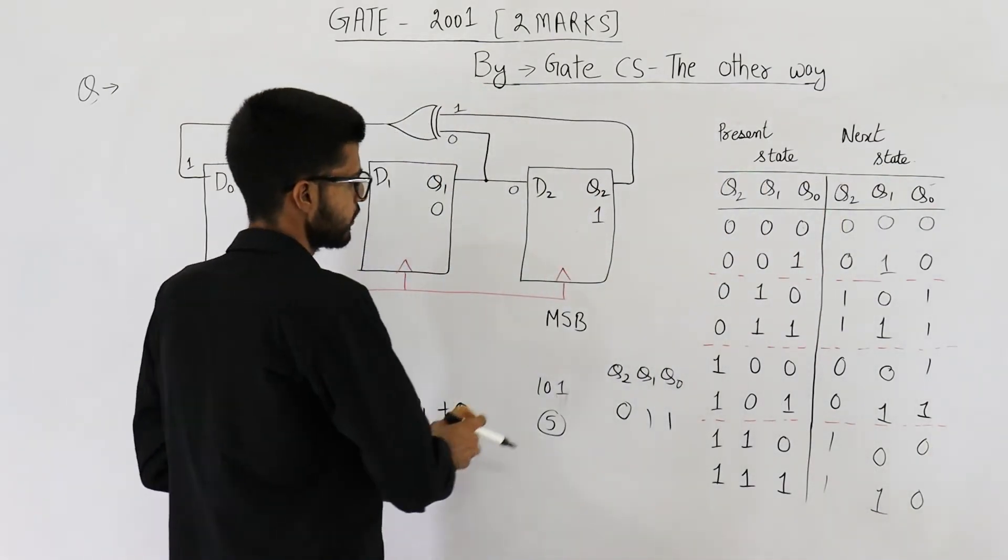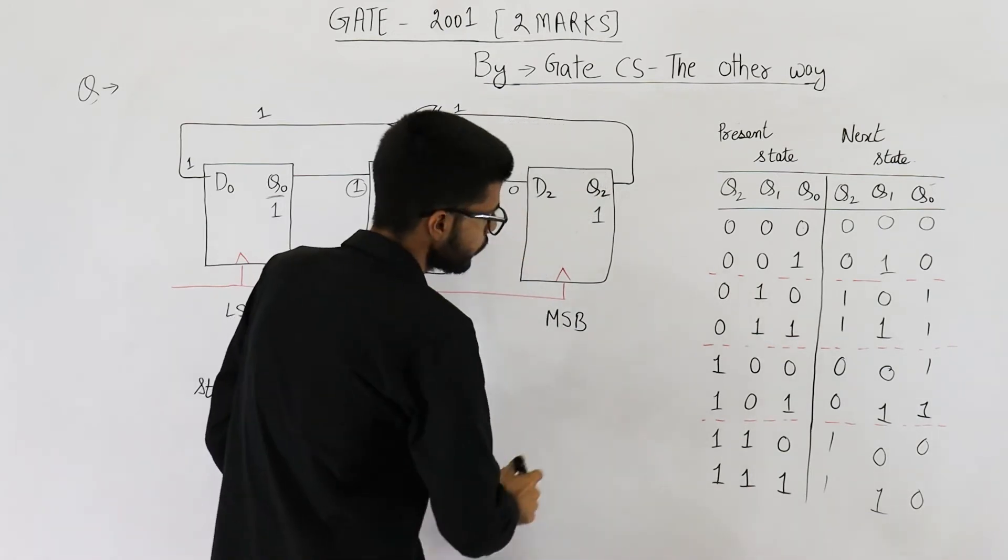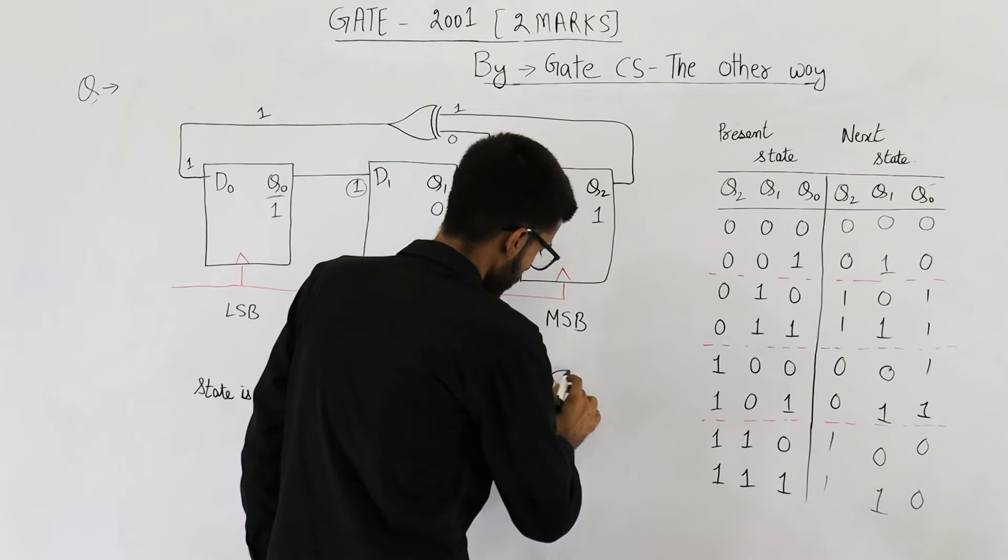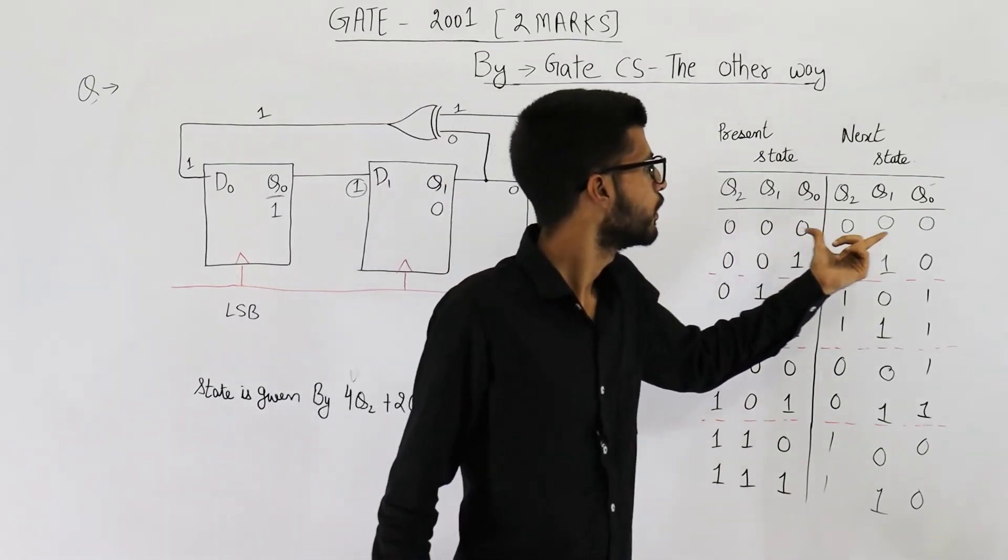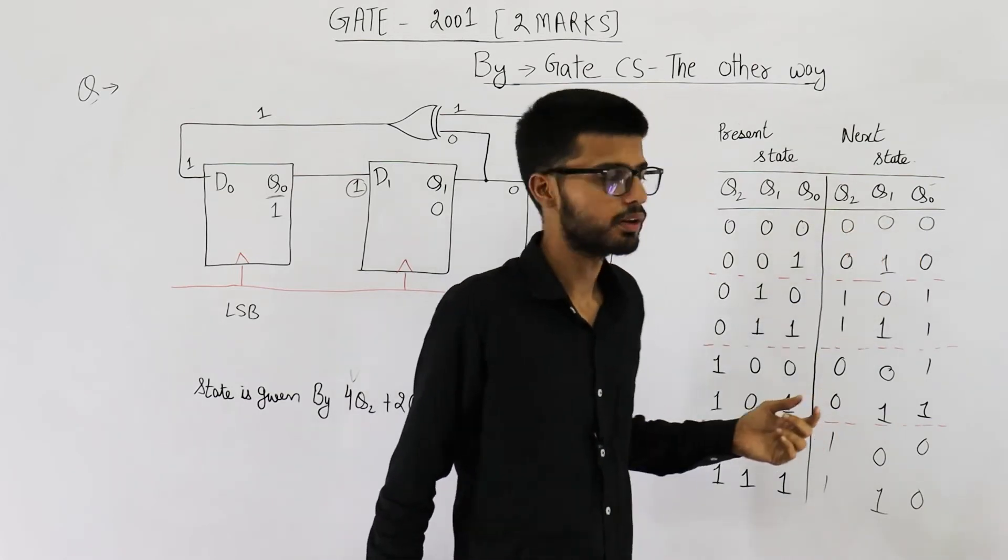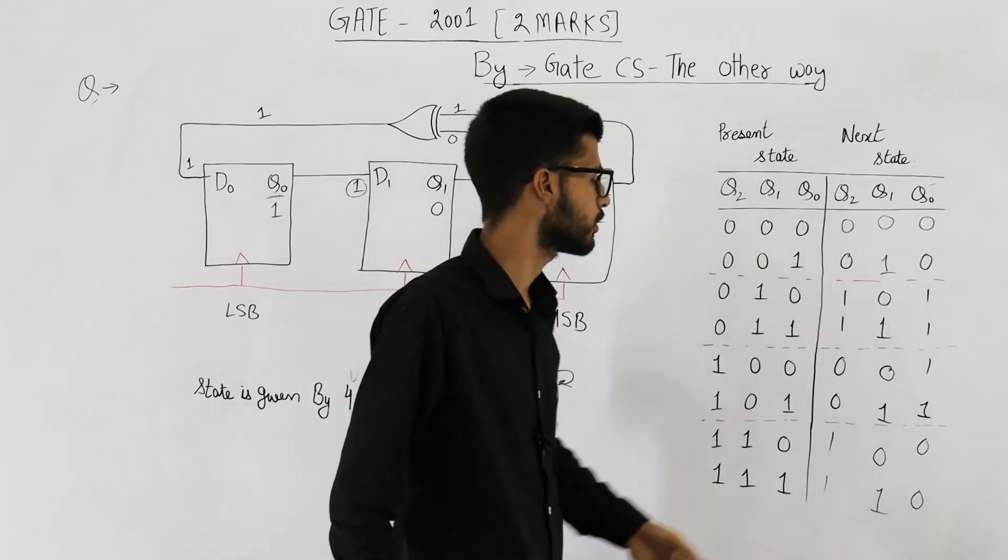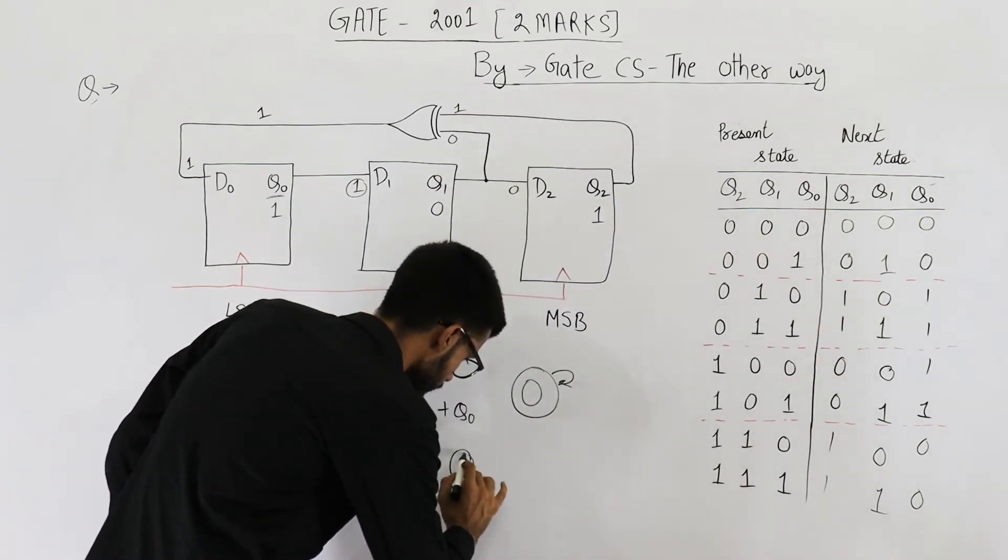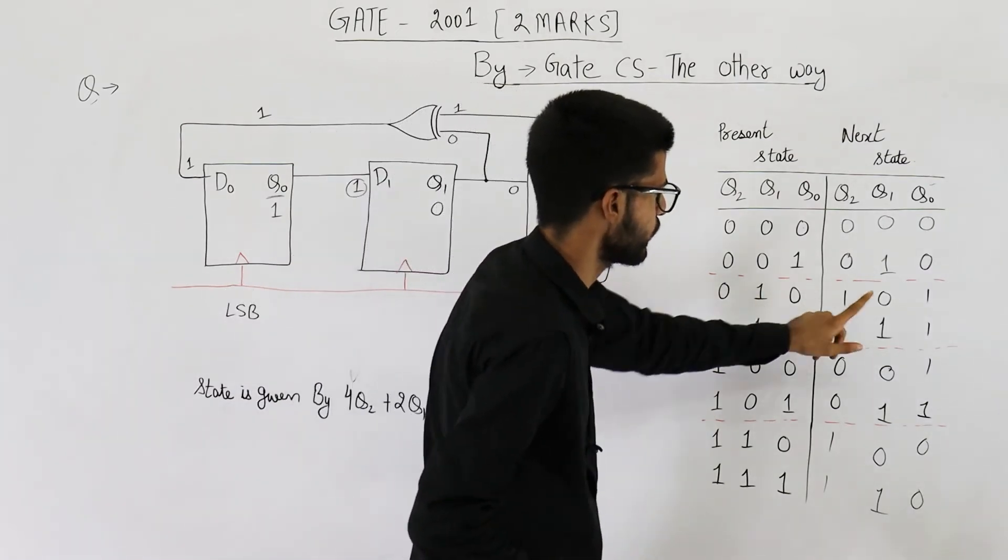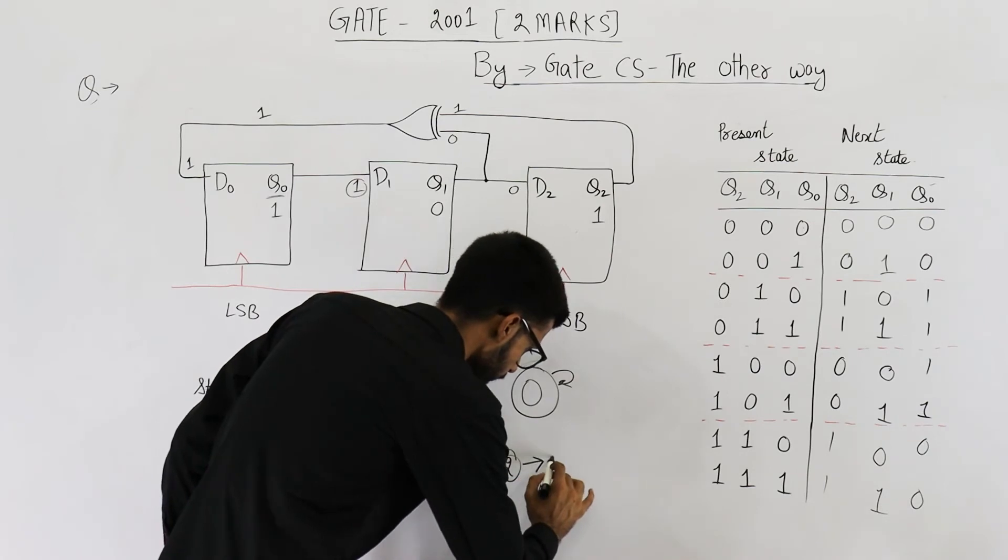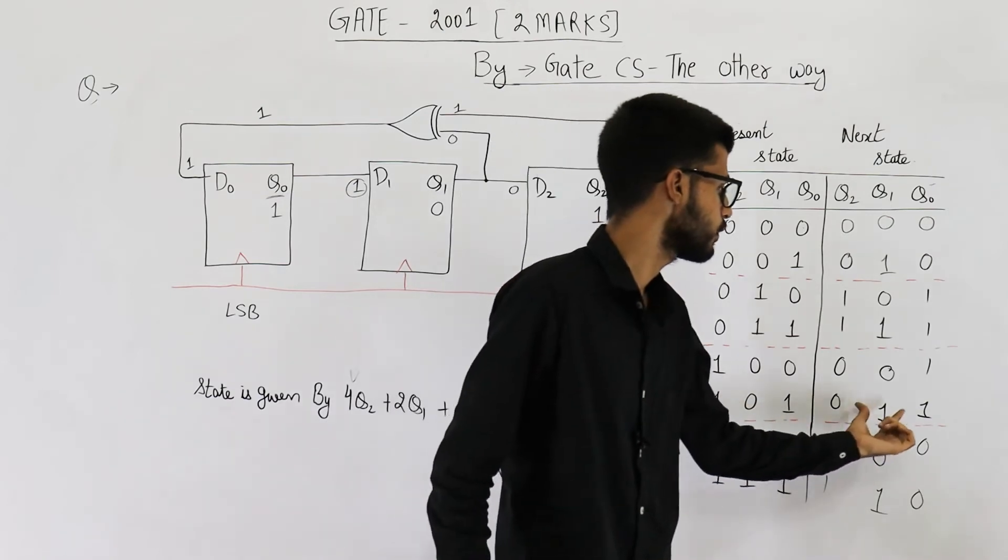Now let's just draw that state sequence. You can see state 0 has a self loop, because if you are on this state, upon seeing a positive clock, you will remain on state 0 only. So I have drawn a self loop. When you are on state 1, you will go to state 2. So state 1 goes to state 2. State 2 goes to state 5. When you are on state 5, upon seeing a clock signal, you will go to state 3.